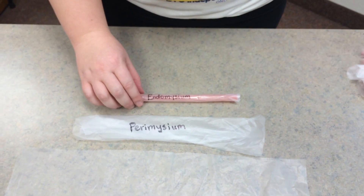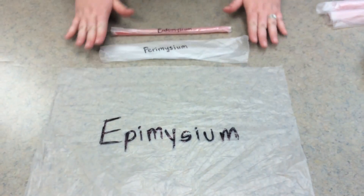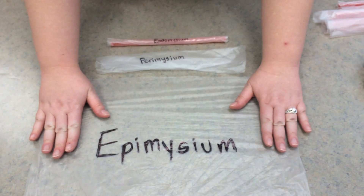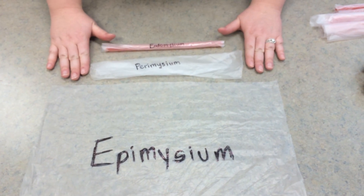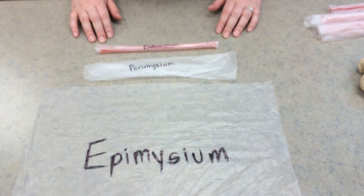So if we go from most superficial to most deep: epimysium is first, perimysium is in the middle, and endomysium is the deepest.